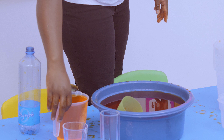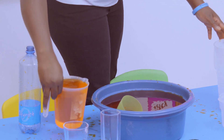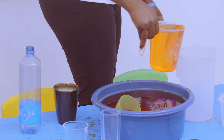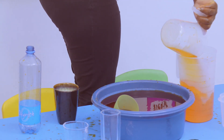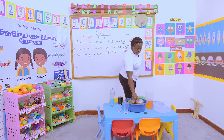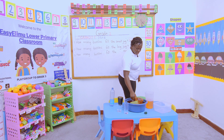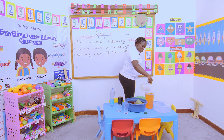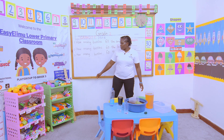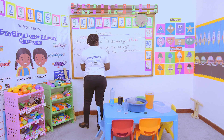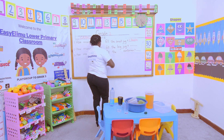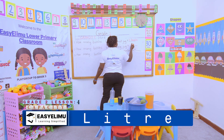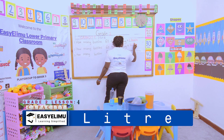Now let's find out how many liter jugs fill the big jug. We have one, and two. So how many liters — how many bottles?